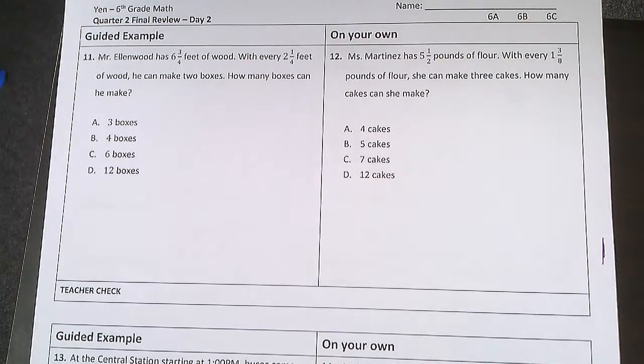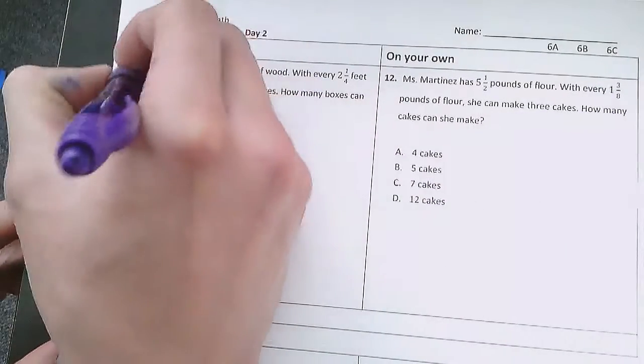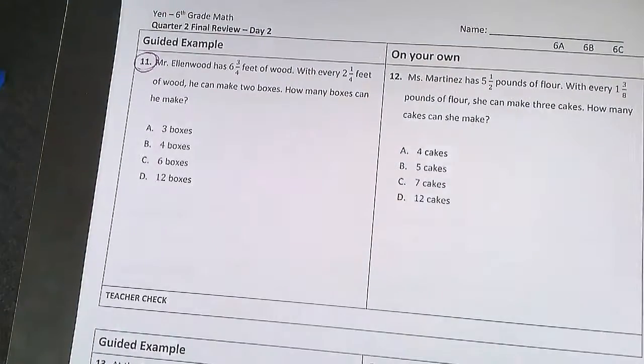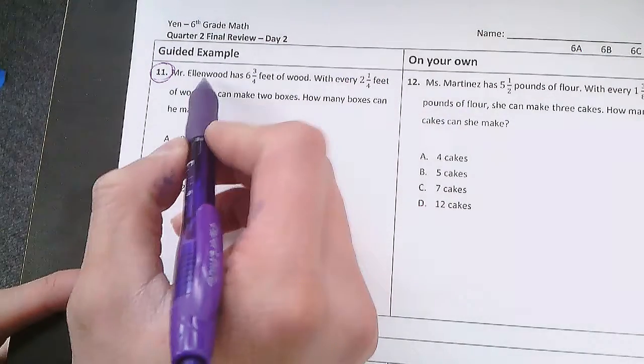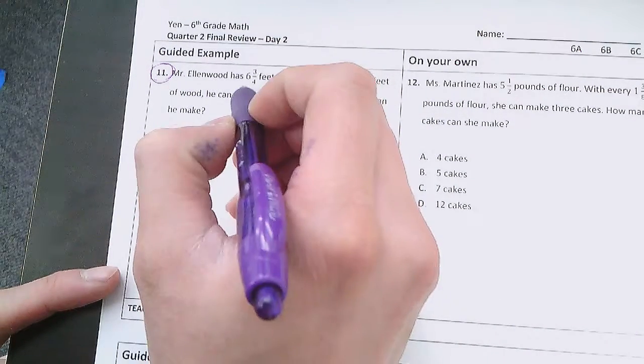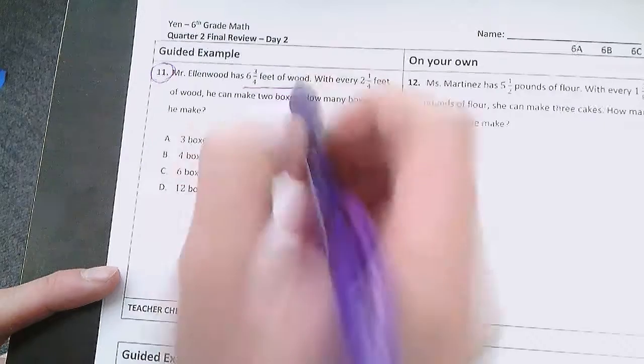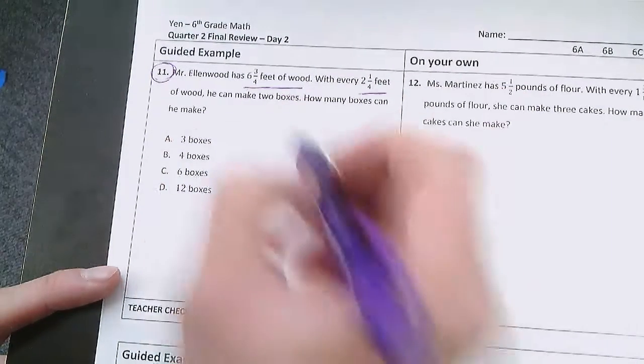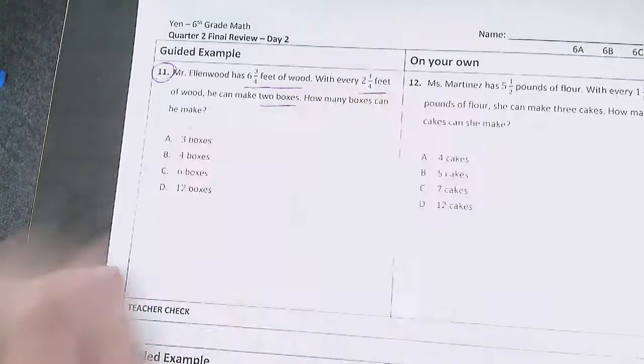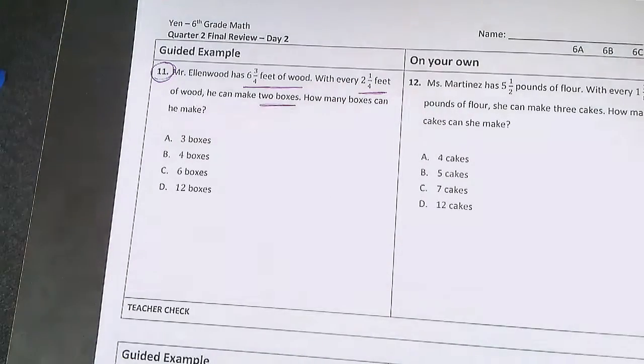Hello everybody and welcome to the video notes for problem number 11 of our review session. Let's read the problem. Mr. Ellenwood has 6 and 3/4 feet of wood and with every 2 and 1/4 feet of wood he can make two boxes. How many boxes can he make?